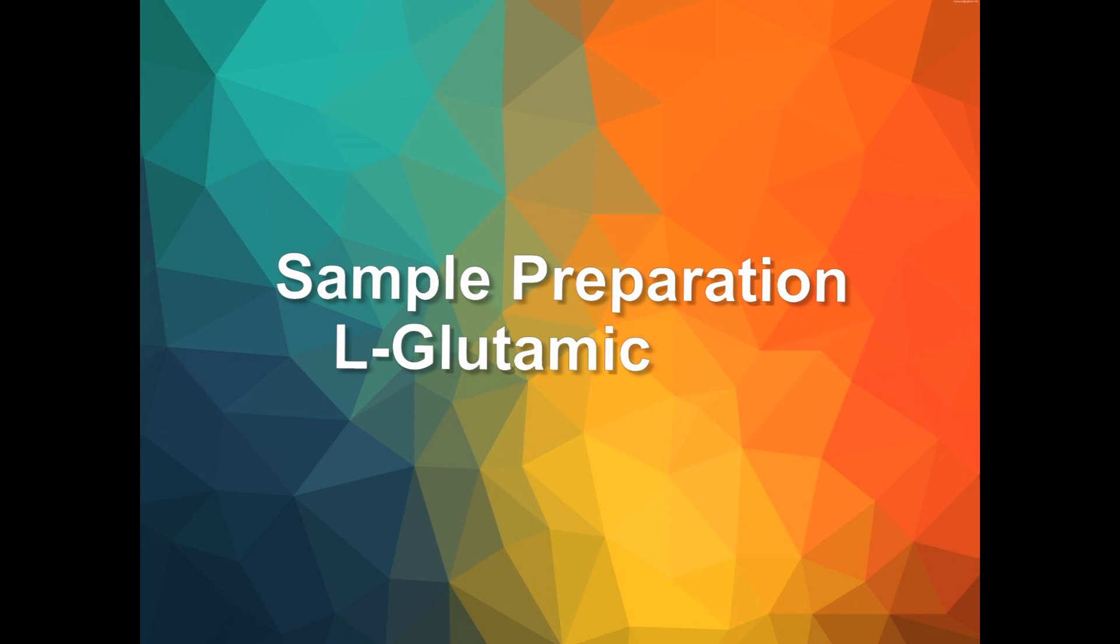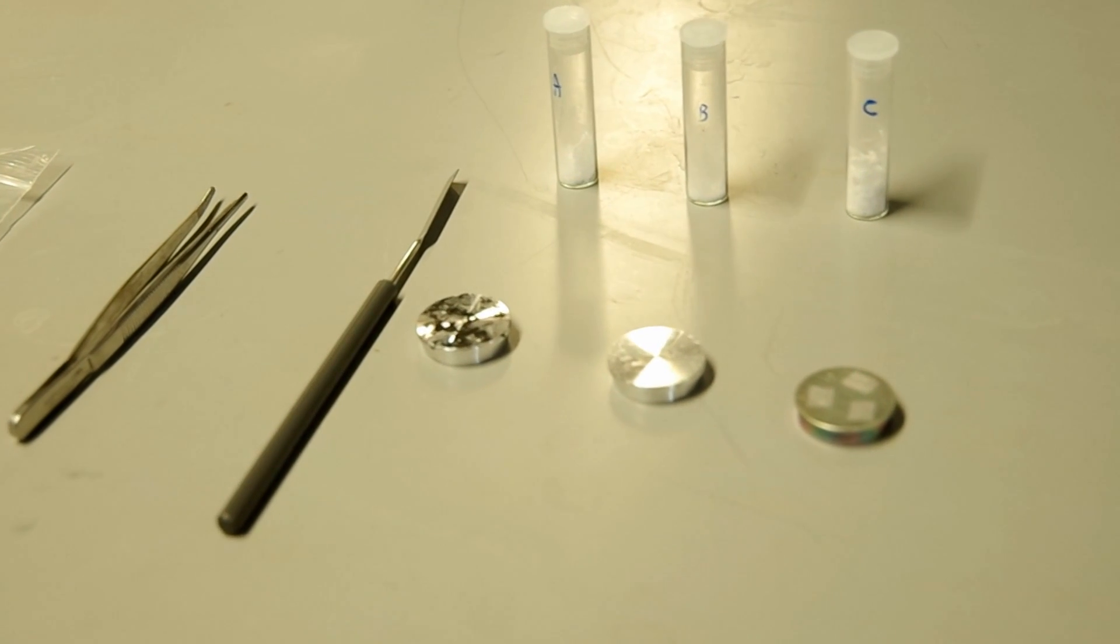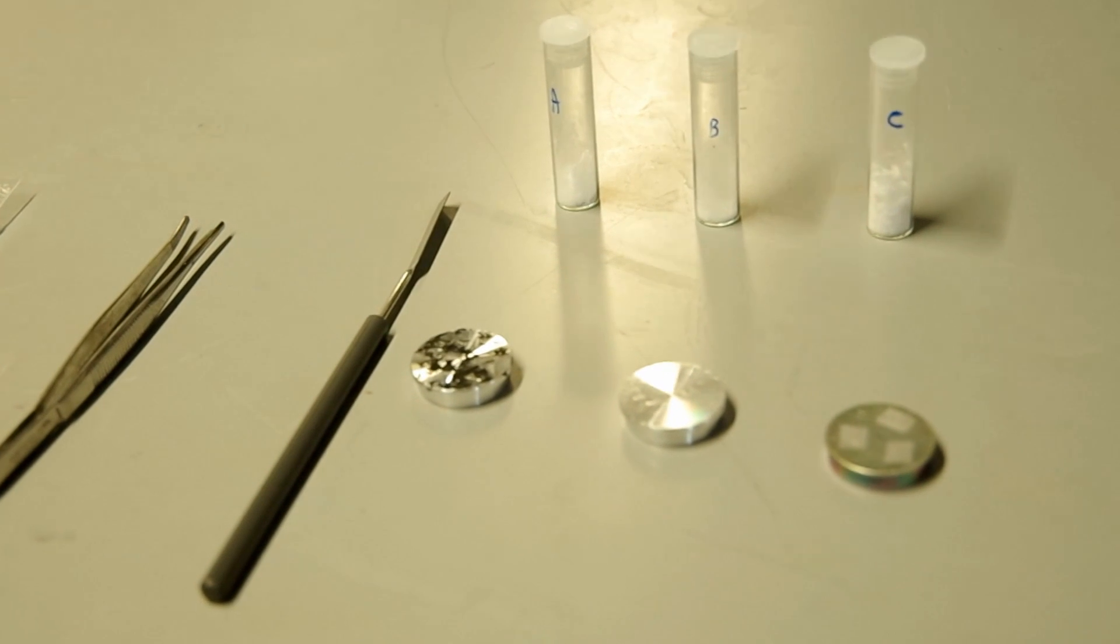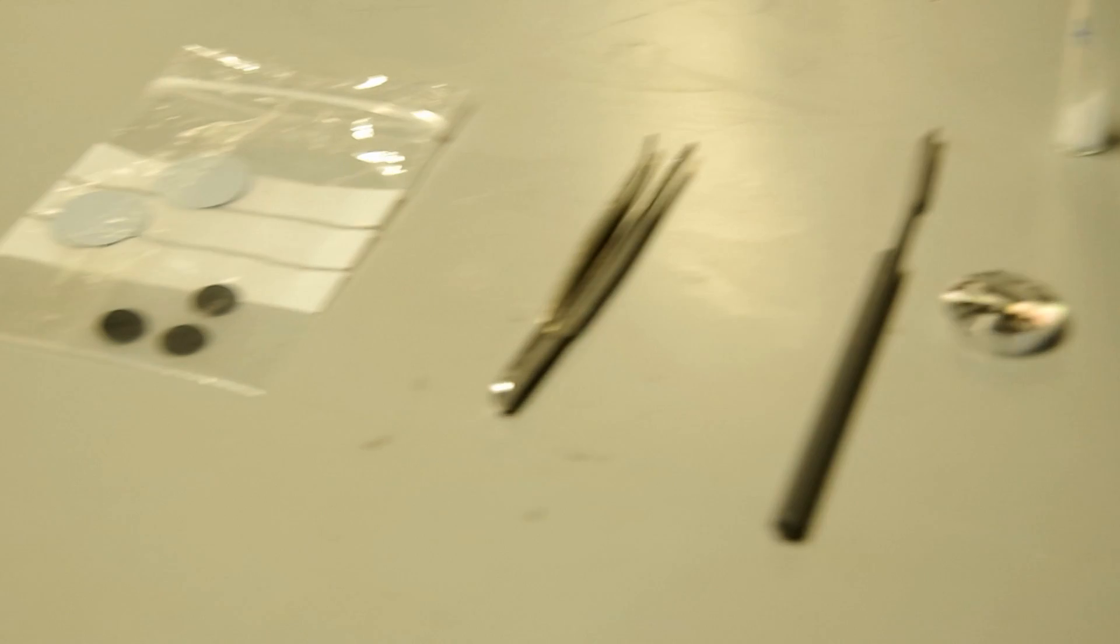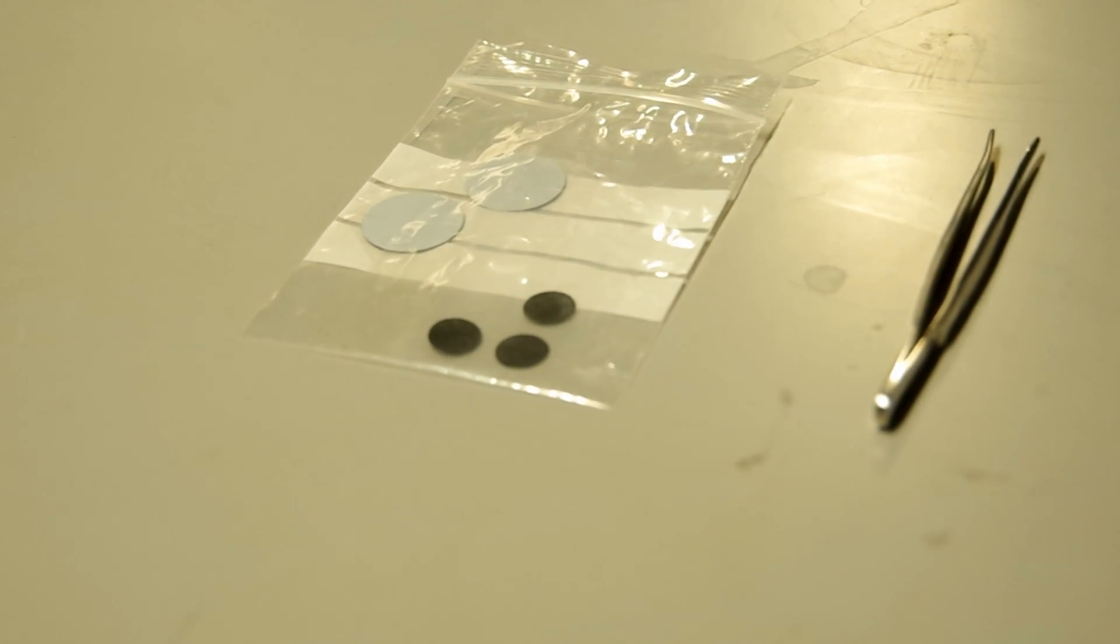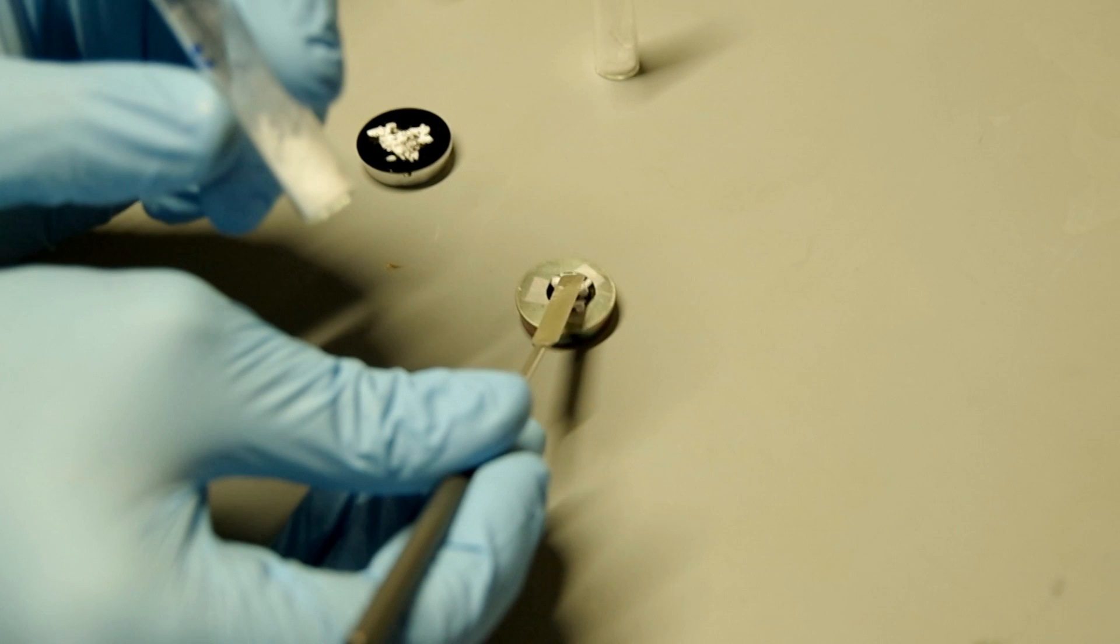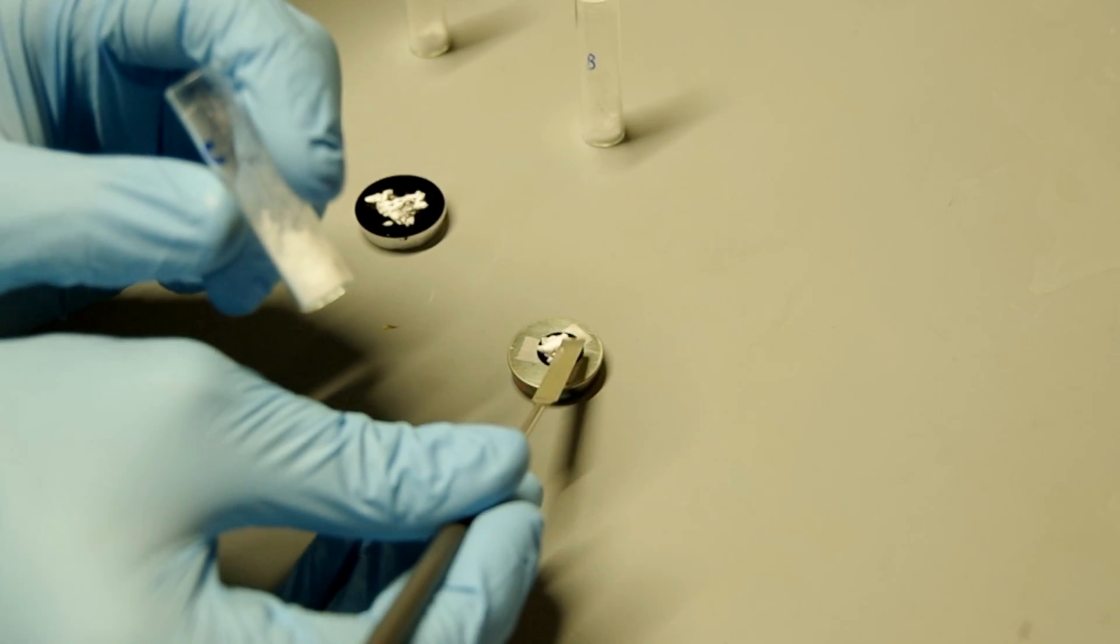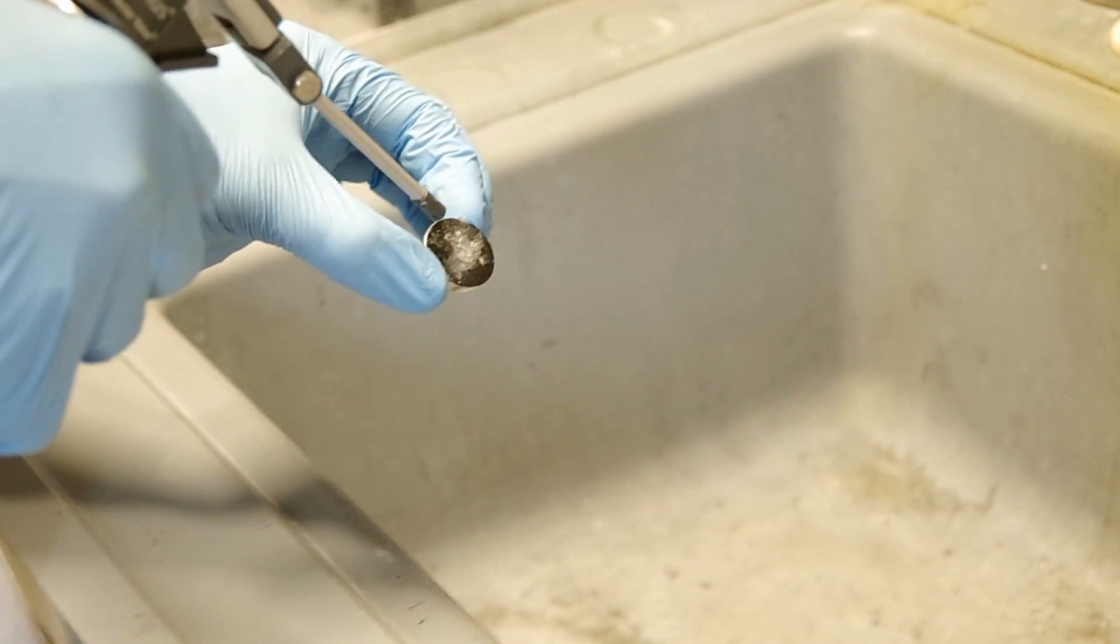Now, let's look at the sample preparation with L-glutamic acid as an example. To do the sample prep, we need sample stud, a spatula, tweezers, and carbon conductive tape. Attach the carbon conductive tape to the sample studs, and use the spatula to put the sample powder on the tip. Use an air gun to blow off the redundant powder.